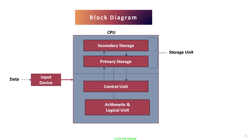The next unit is the arithmetic and logical unit. As the name says, it is used for performing arithmetic operations and logical operations. Arithmetic operations include addition, subtraction, multiplication, division, etc., and logical operations include logical AND and logical OR. The CPU contains the storage unit, control unit, and arithmetic and logical unit, and data is processed within the CPU.